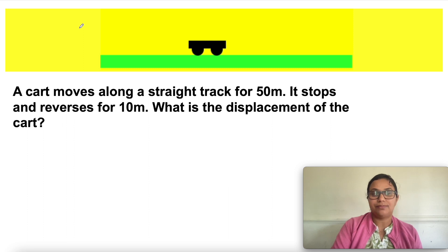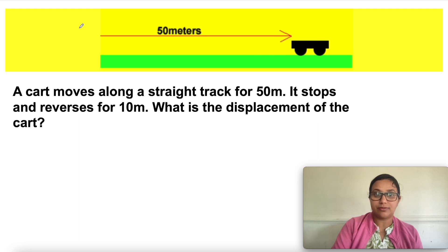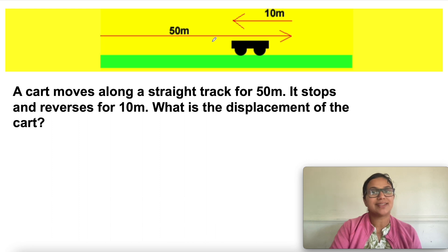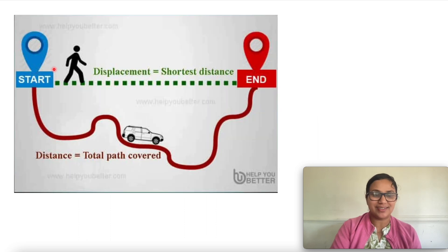Another example: a cart moves along a straight line track of 50 meters, then stops and reverses for 10 meters. The displacement of the cart is 40 meters, and the distance traveled is 60 meters.